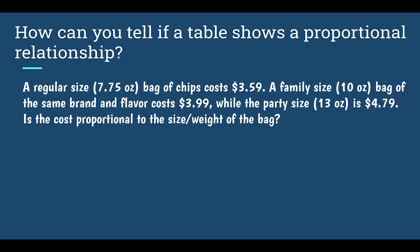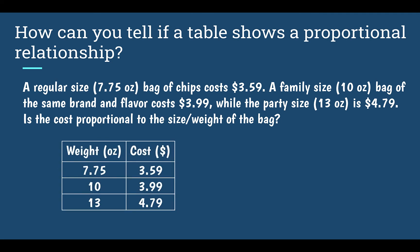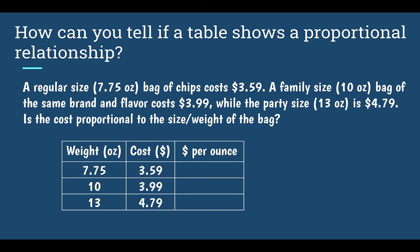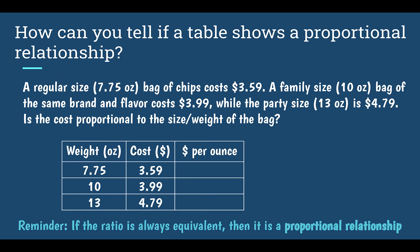Let's look at a different example. A regular size 7.75-ounce bag of chips costs $3.59. A family size of 10 ounces costs $3.99, while the party size of 13 ounces is $4.79. Is the cost proportional to the size and weight of the bag? If we put it in a table, I paired the weight with the cost. I want to find my constant of proportionality — how much it costs per ounce — and remember, in order for it to be a proportional relationship, the ratio must always be equivalent, so the constant of proportionality is always the same.